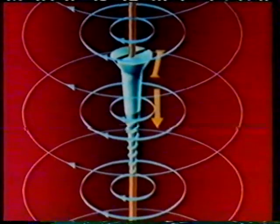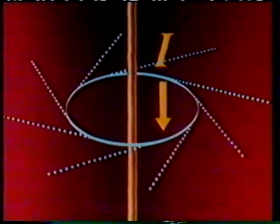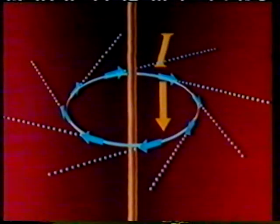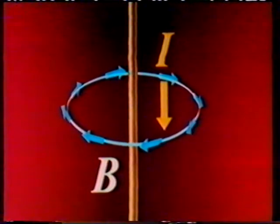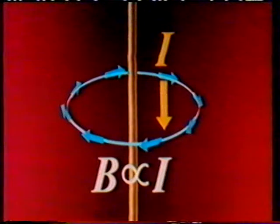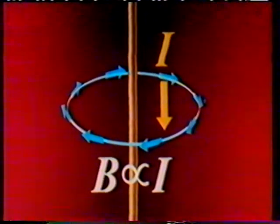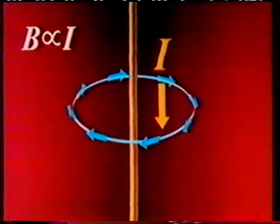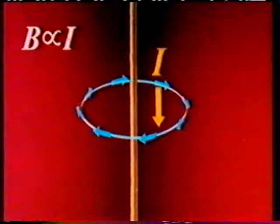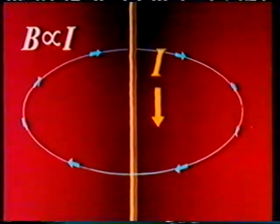At any point on a line of induction, the direction of the magnetic field is given by the tangent. Furthermore, the magnetic induction has the same value at any point on the circle. If the current is increased, the induction will increase in direct proportion. The value of magnetic induction also depends on the size of the circle; if a larger circle is considered, it will be found that the magnetic induction is proportionally weaker.